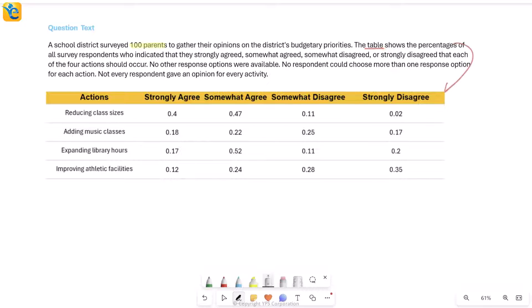The table here shows the percentage of all survey respondents - all 100 parents - who indicated that they strongly agreed, somewhat agreed, somewhat disagreed, or strongly disagreed. These are the four categories among which they chose their answers about each of four actions that should occur.